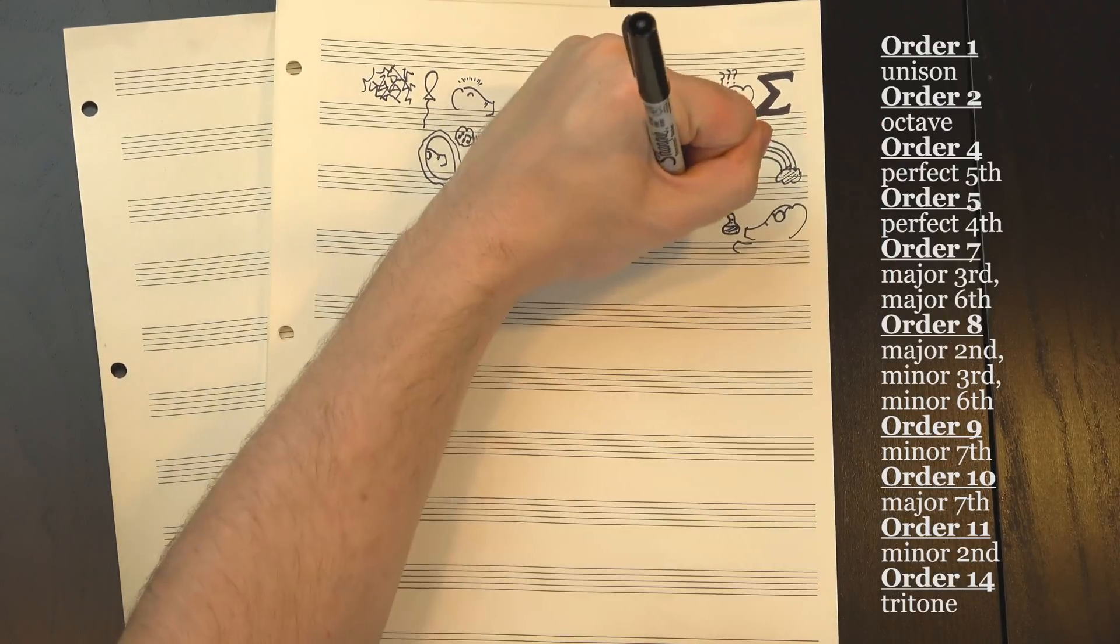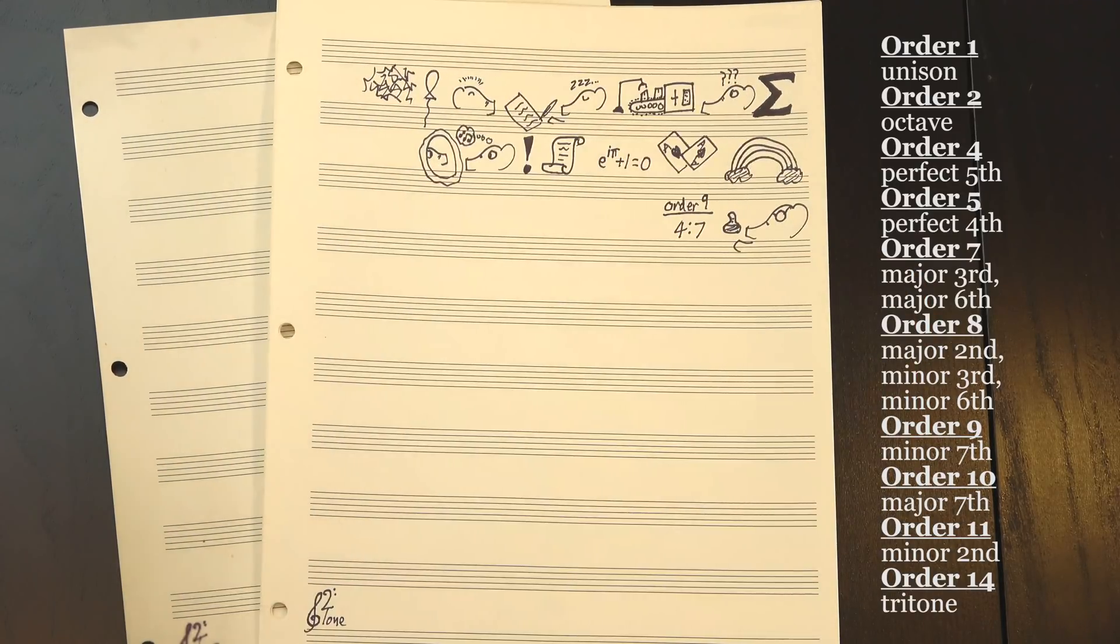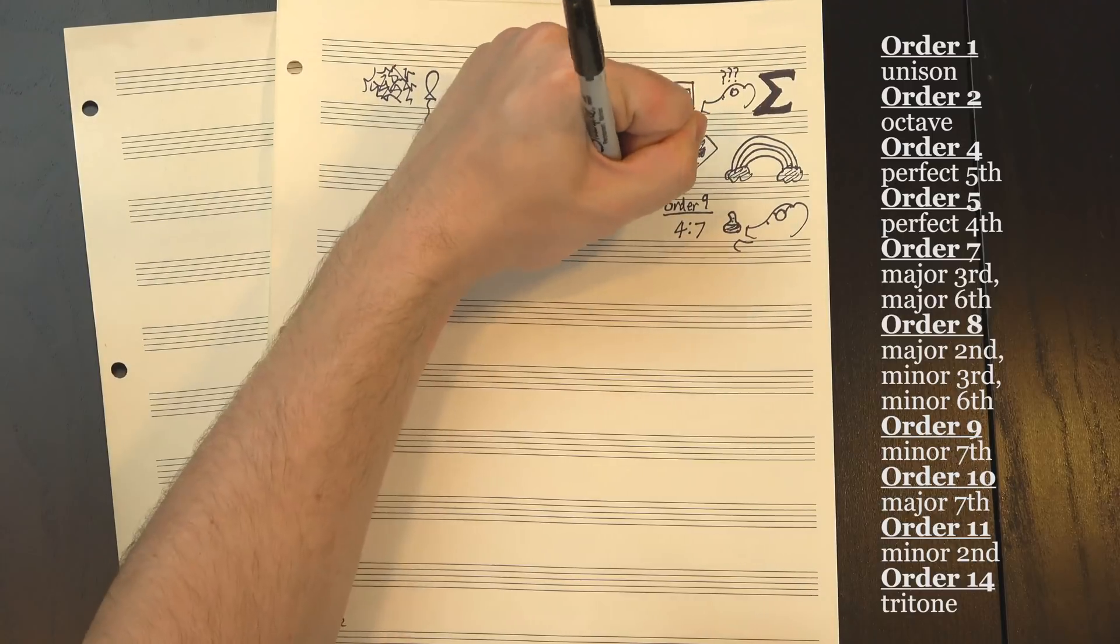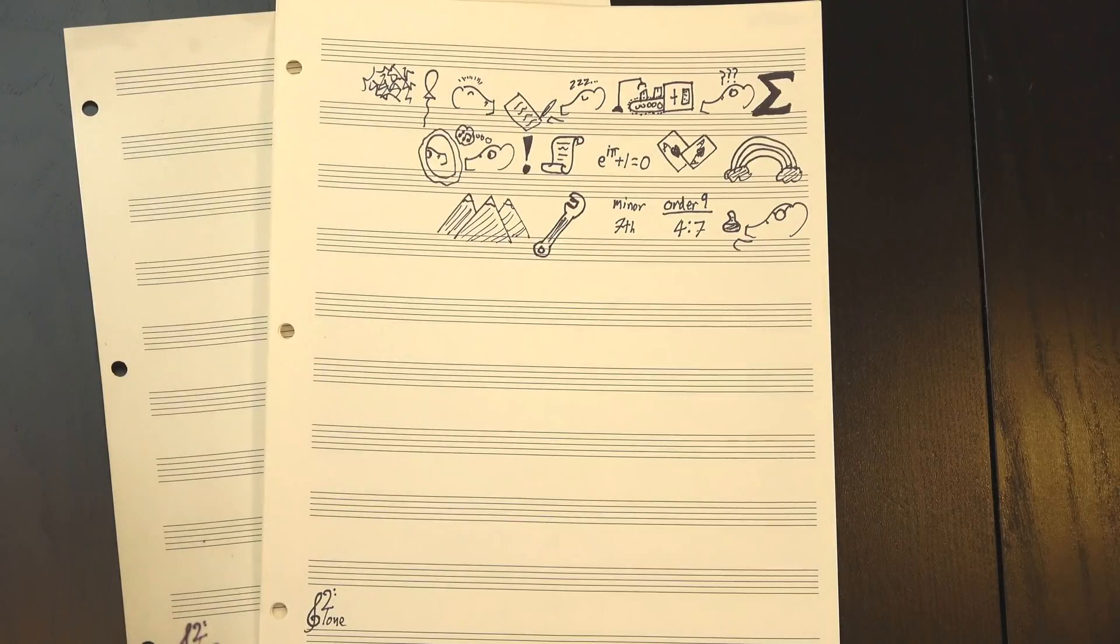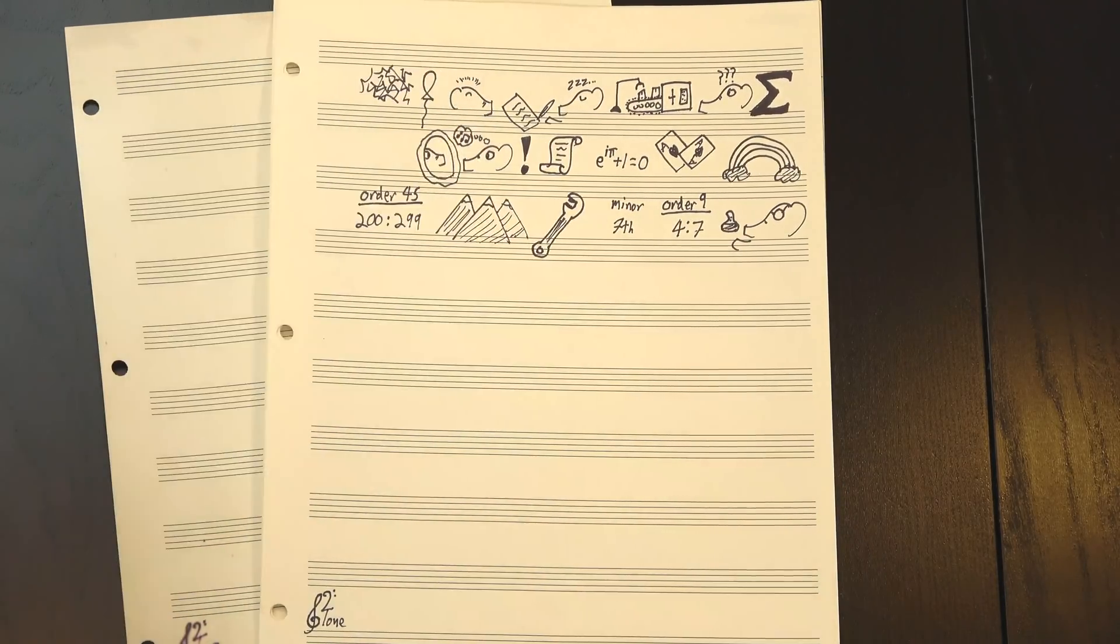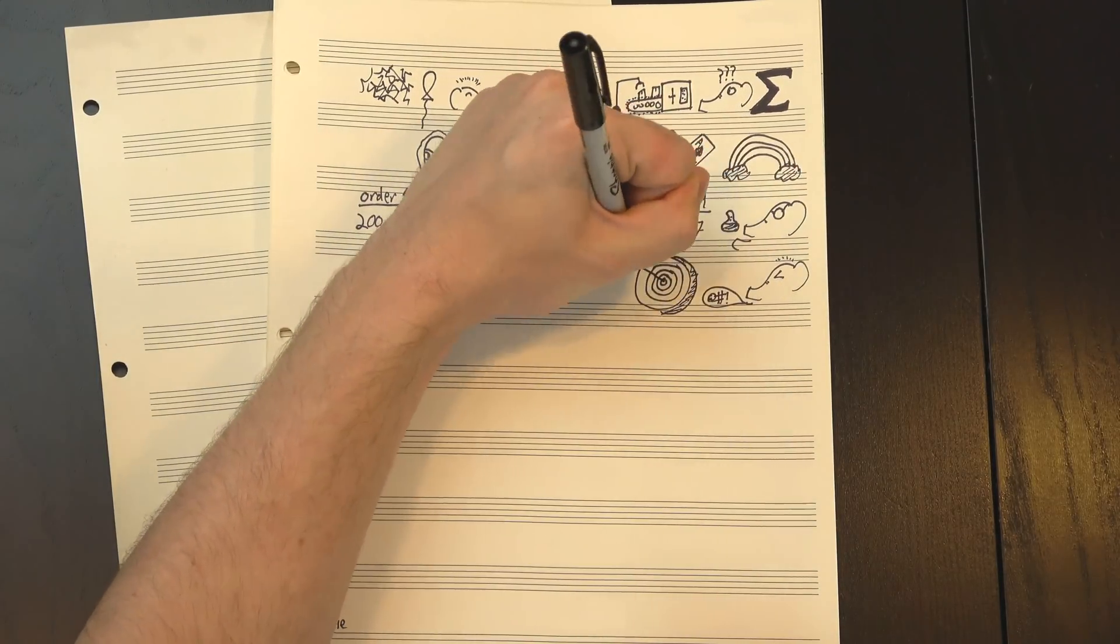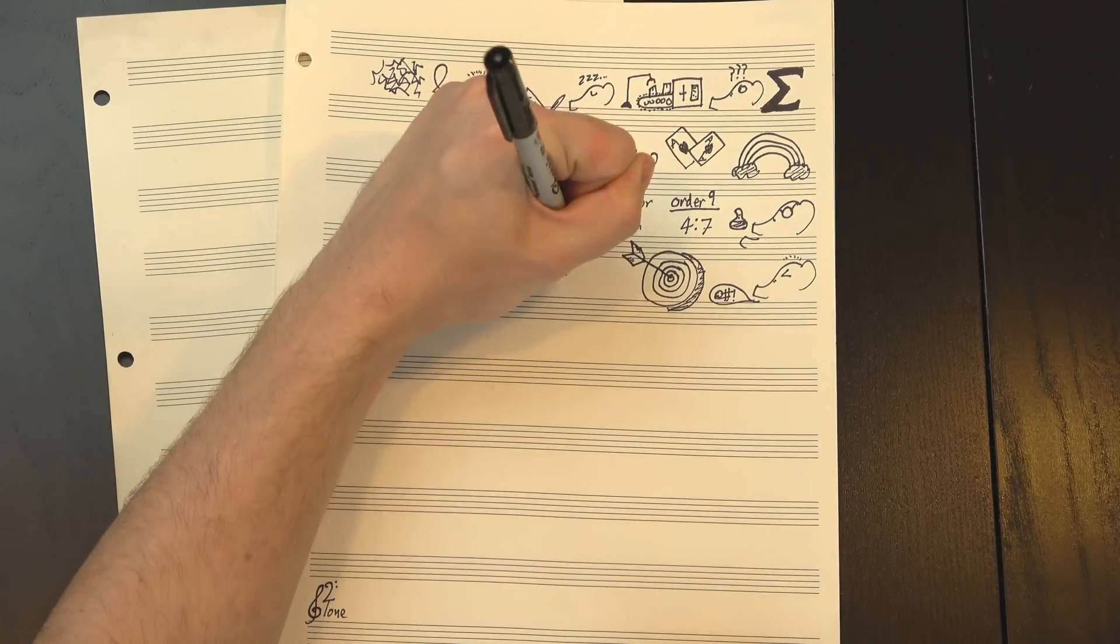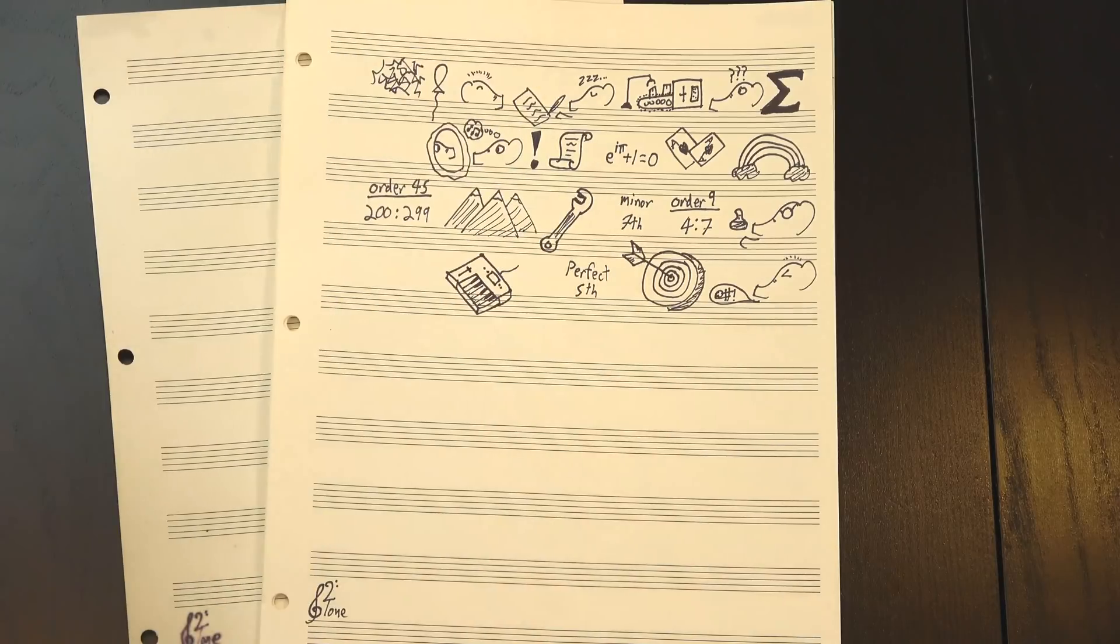For instance, I rarely encounter the 4-7 ratio, but if we run it through the formula we see it's order 9, which means we'd expect it to be about as consonant as a minor 7th. But there's still some problems with the system, especially as we get to bigger numbers. For instance, the 200 to 299 ratio is order 45, so it should sound really, really dissonant, and if our ears were precise enough, maybe it would? But in practice, it just sounds like a slightly flat, perfect fifth.